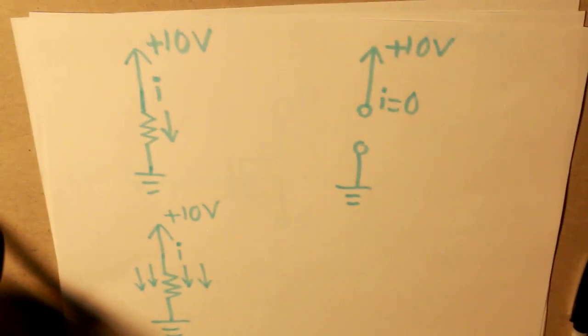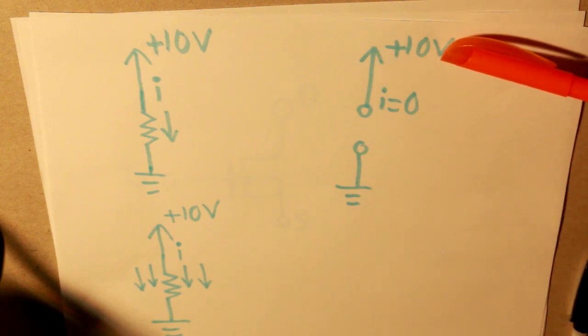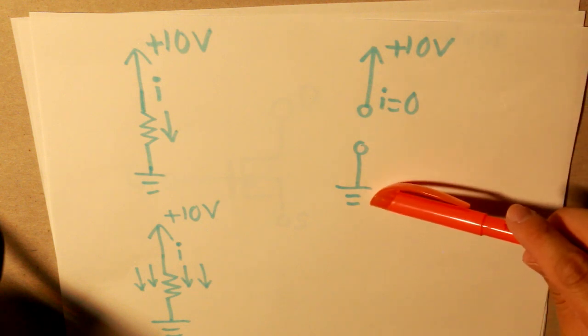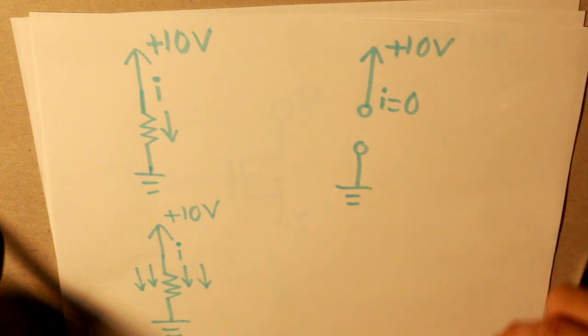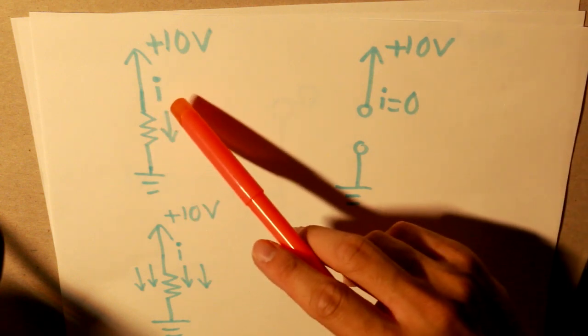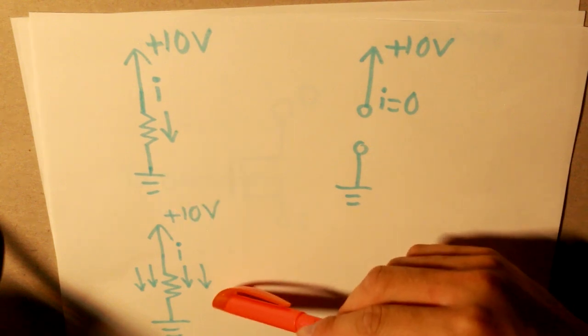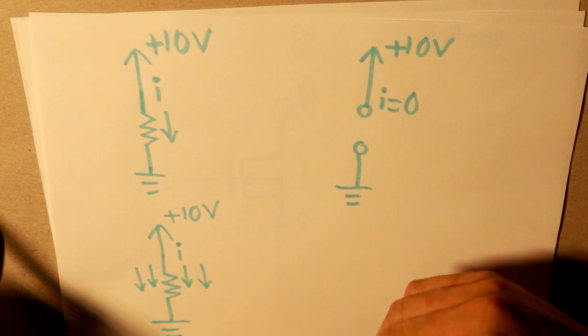So here we have scenario here, three different circuits, and we have a circuit where we have a high voltage source, and then there's a ground. Now we have the situation here where, in this situation, the current is zero. And here, a little bit of current is passing through the ground. And in this situation, where a lot of current is traveling to the ground.